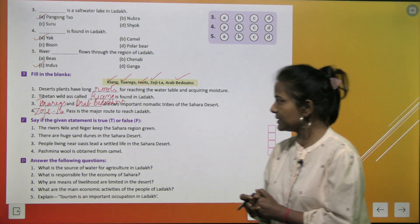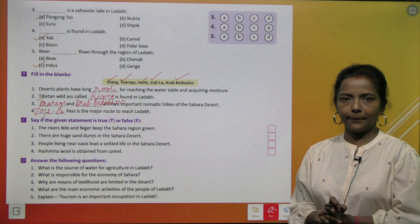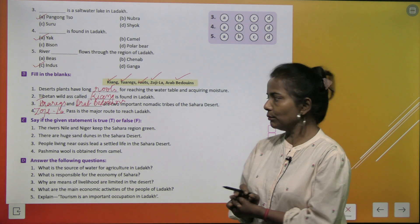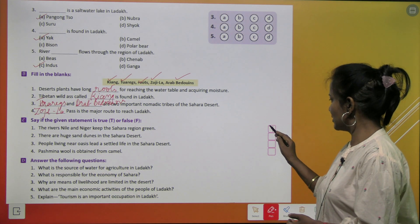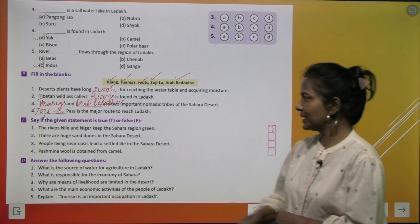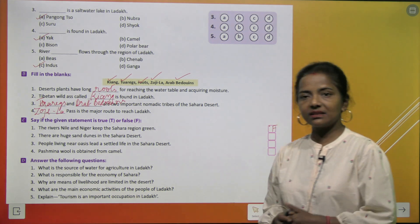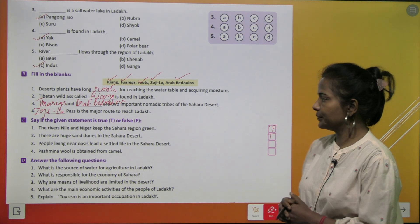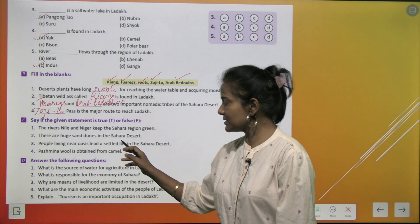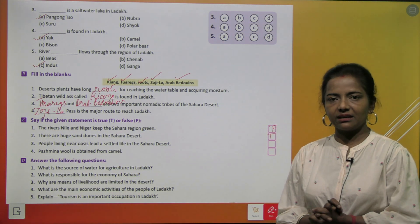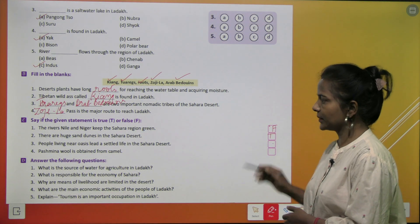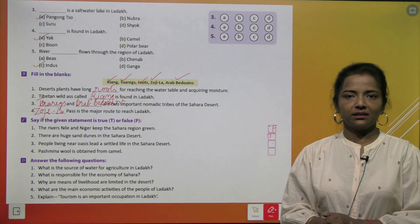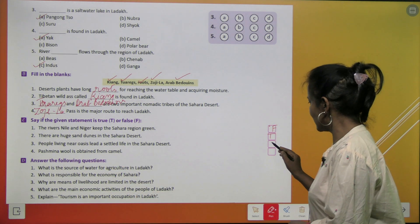True or False: the river Nile and Niger keep the Sahara region green — False; there is no greenery in Sahara. There are huge sand dunes in the Sahara desert — True. People living near oases lead a settled life in the Sahara desert — True. Pashmina wool is obtained from camel — False.